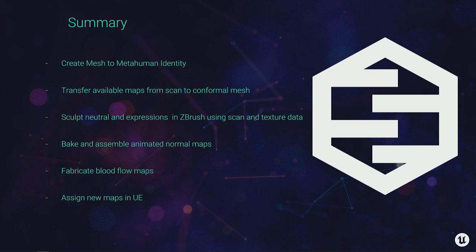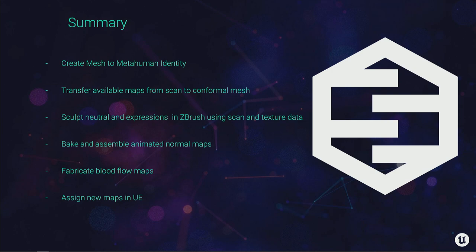Here's a brief summary of what we are going to go through today. After some theory, we are basically going to create the MetaHuman identity, then use maps from a scan to transfer to the low-poly topology and UV space, redo the ZBrush sculpts for neutral and expressions, bake out all the normal maps, and use the normal maps to fabricate the blood flow maps. We have only one input — a scan for the neutral — so pretty much everything else needs to be invented. Finally, we are going to test that out in Unreal Engine.